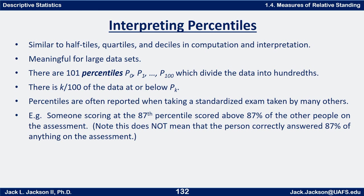Percentiles are often reported for standardized exams. If you scored at the 87th percentile, that does not mean you got 87% of the questions right — it means you scored at or above the level reached by 87% of the people who took the test; in other words, you outscored 87% of the people. In our next video we'll talk about a box plot or box-and-whiskers plot, which will give us a way of visualizing the quartiles.